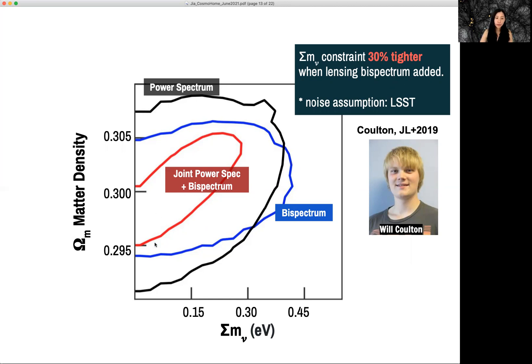But because they have different direction of degeneracy, when you combine them, you get this red joint constraint, which is 30% tighter than the power spectrum alone. In this plot, we assume LSST-like noise and the weaklensing only.